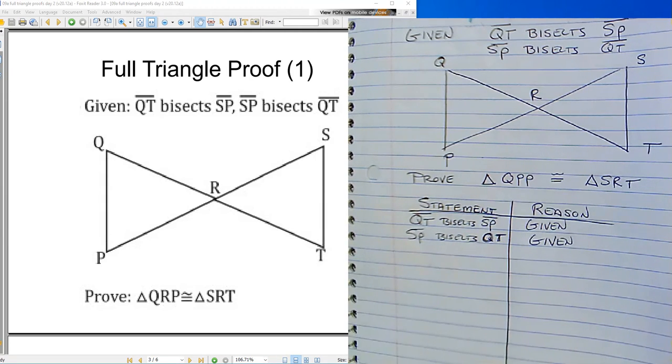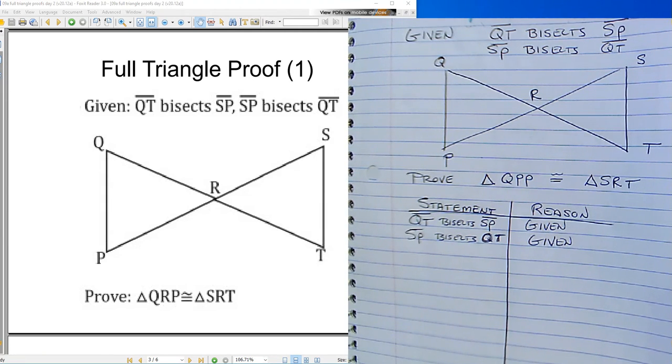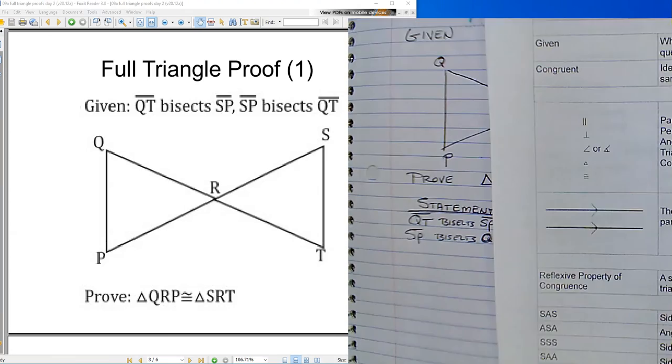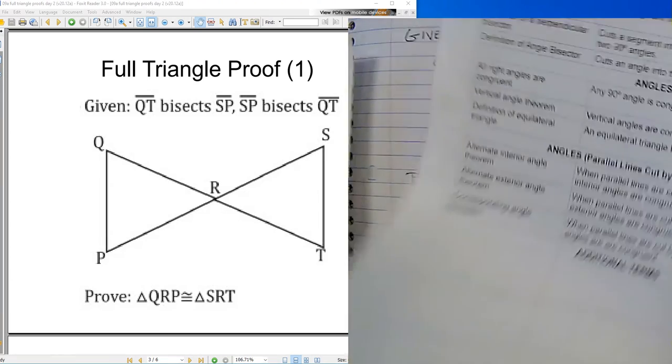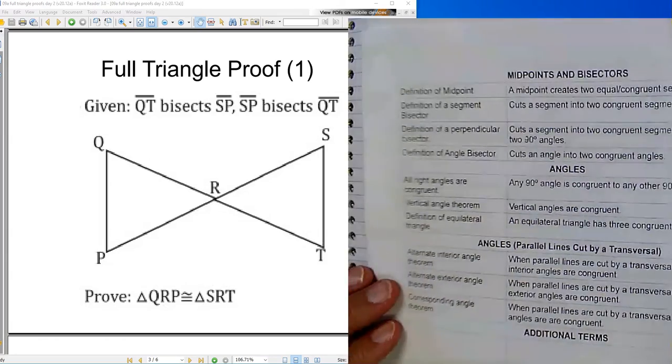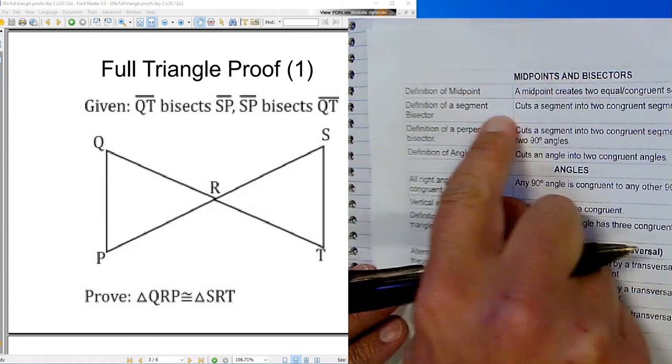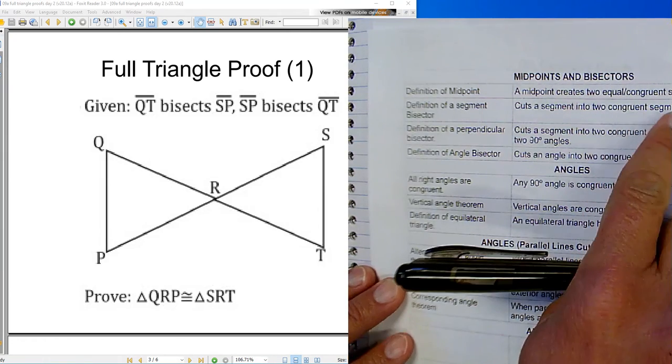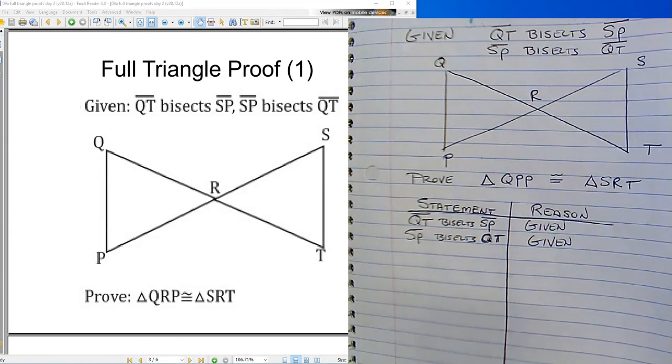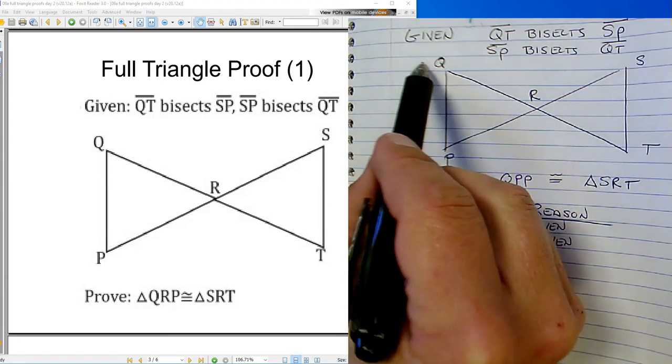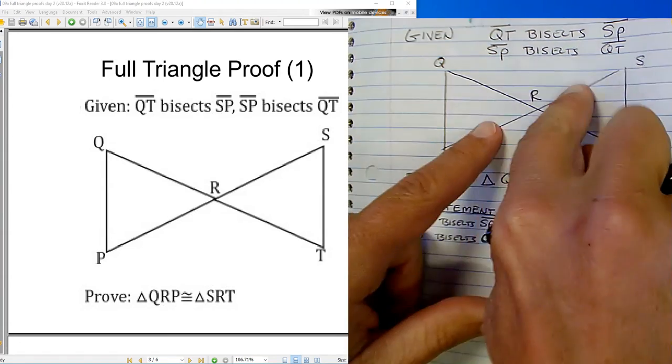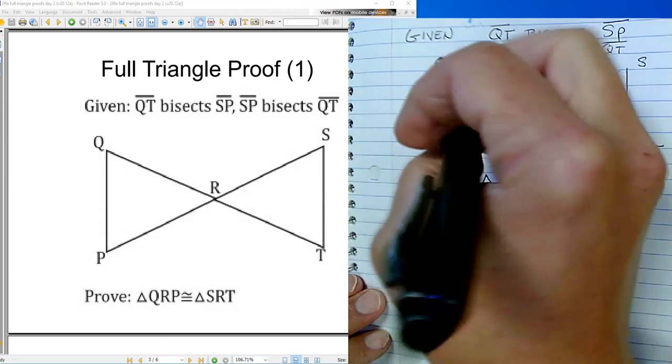Well, what does it mean to bisect something? Let's look it up in our magical paper here. It's got all the good stuff on it. Bisects, bisects. Definition of a segment bisector. A segment bisector cuts a segment into two congruent segments. So what is this doing? QT, QT is like a knife. It's a knife and it's cutting this guy in half. Let's mark that up.